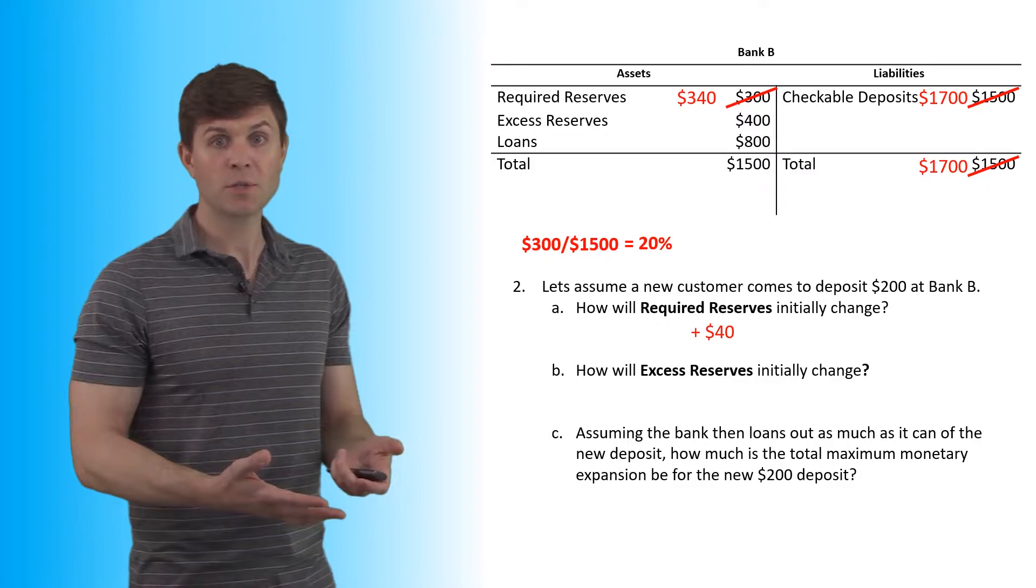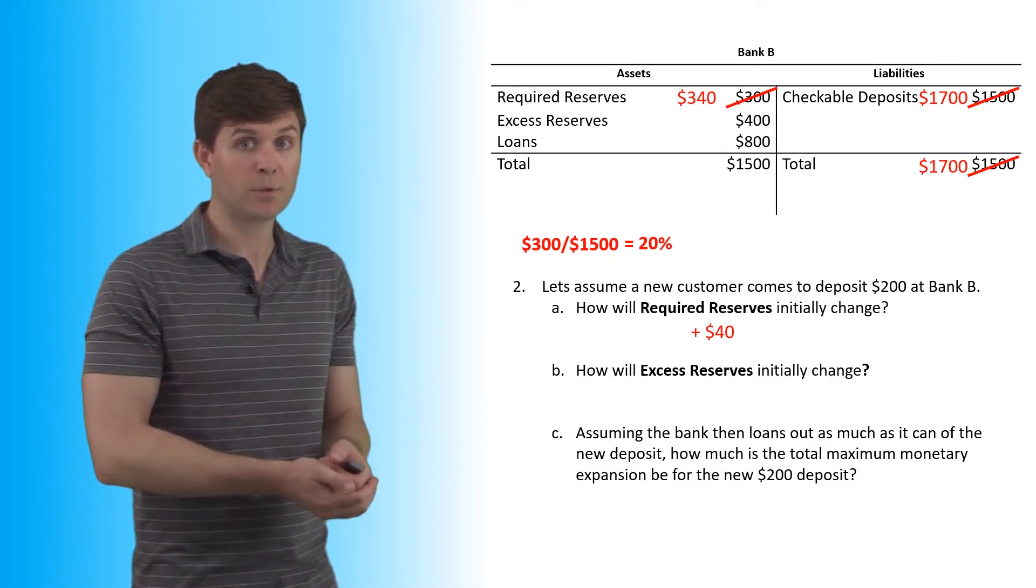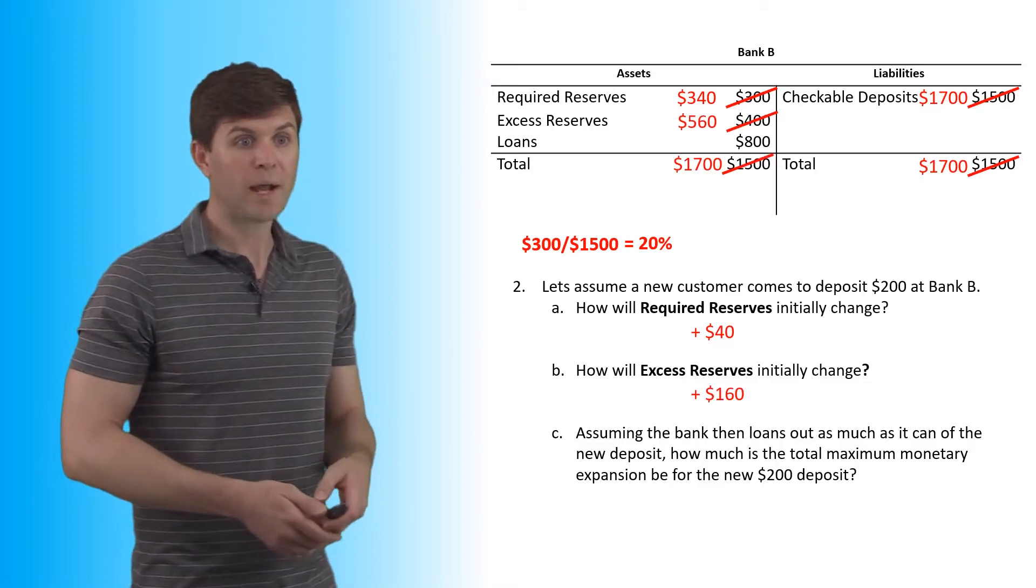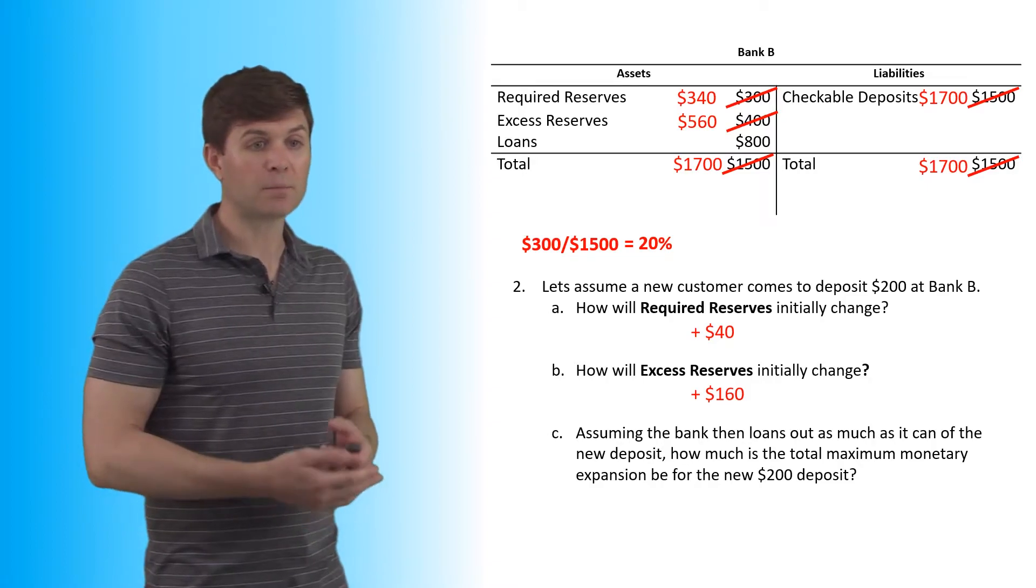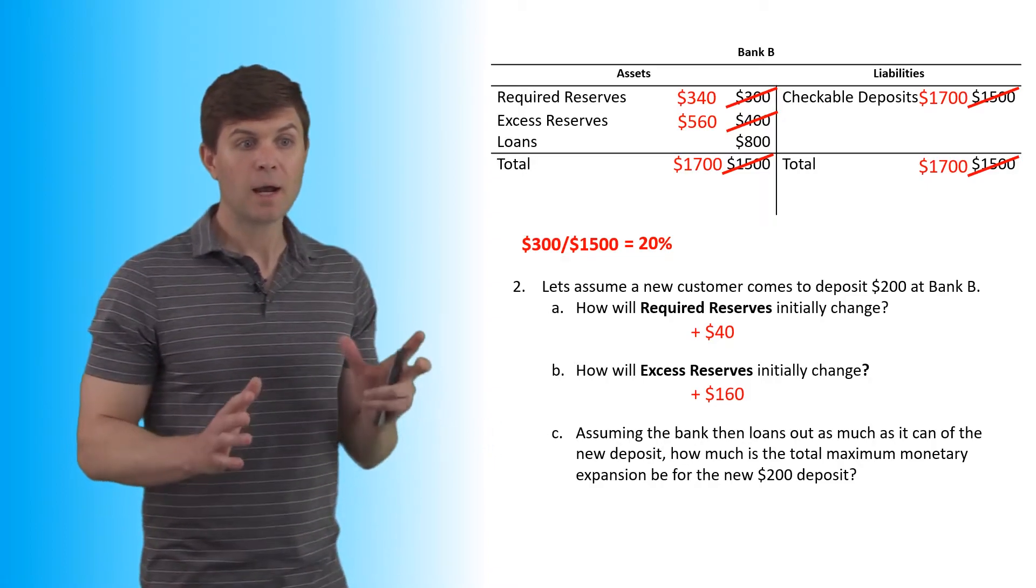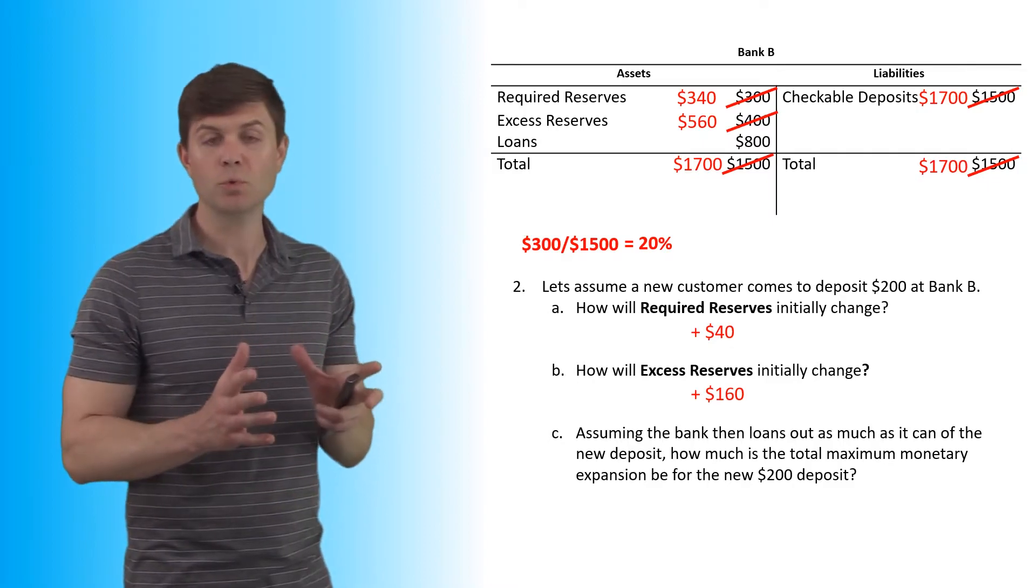How much will excess reserves initially change? Basically the difference between the initial deposit and what had to be put in the vault, the required reserves. So excess reserves is going to increase by $160. All right, assuming the bank then loans out as much as it can of the new deposit, how much is the total maximum monetary expansion to be for the new $200 deposit?